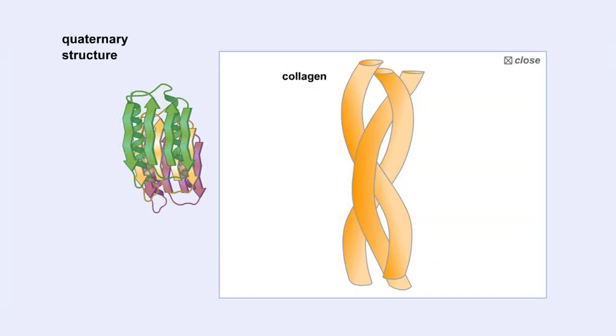Collagen is an example of a fibrous protein. Fibrous proteins form long strands, either from a single polypeptide chain or when two or three polypeptide chains wrap around each other in a helical pattern. This arrangement gives collagen great strength.